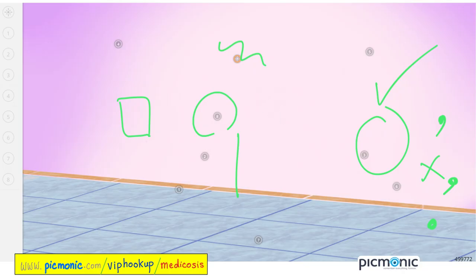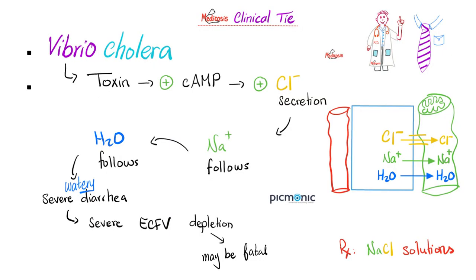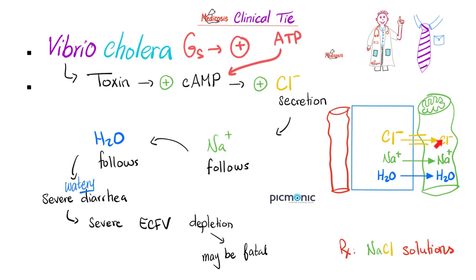Now let's look at how the Vibrio cholerae toxin works. It's an enterotoxin — a toxin that works on your intestine. It is Gs-coupled, meaning it activates adenylate cyclase, which converts ATP into cyclic AMP. The cyclic AMP in your intestinal cells opens chloride channels, leading to chloride secretion from intestinal cells into the lumen. Chloride is negative, so positive sodium follows, and then water follows the salt by osmosis — giving you watery diarrhea, described as rice-water diarrhea.